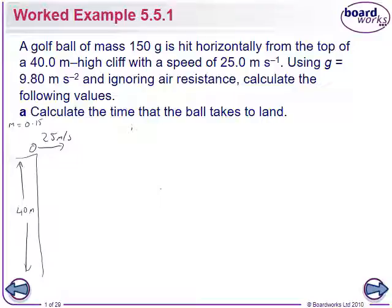It's important that we separate out our horizontal and our vertical components. Our horizontal speed is starting at 25 meters per second, but that has nothing to do with the vertical component. We just want to work out the time the ball takes to land. In terms of our SUVAT equations, which letters have we got? We've got U. What's U? Zero. So our initial speed is zero. What else have we got? S. What's S? Forty.